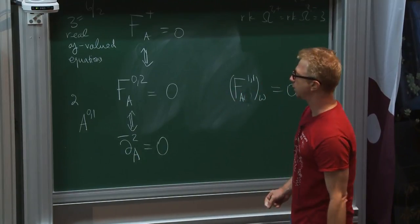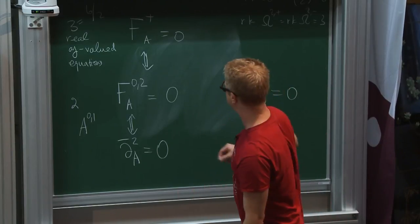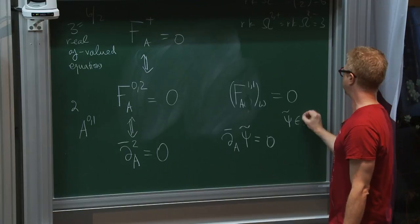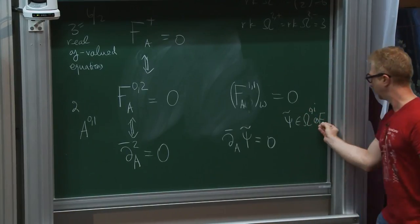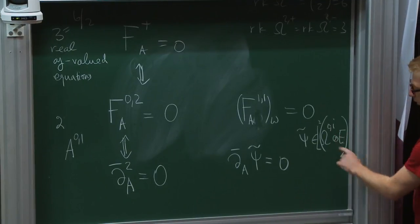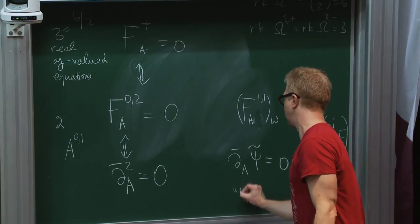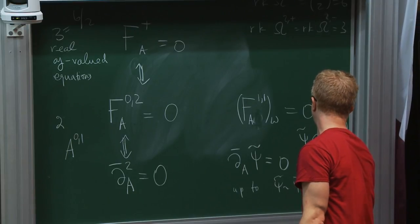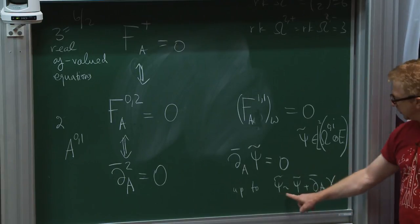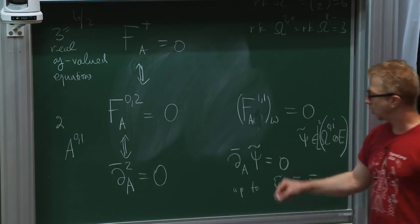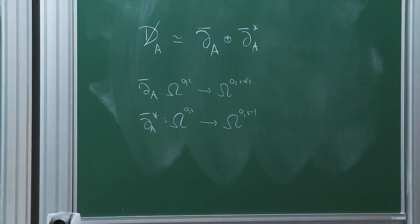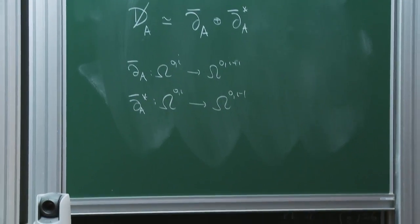Because of the integrability condition you can form a cohomology problem: you look for L2-normalizable E-valued (0,i)-forms which are killed by D-bar_A up to exact forms. Instead of dividing by exact forms you can impose a gauge condition involving the conjugate operator, and in the end this gauge-fixed problem is equivalent to solving the Dirac equation.